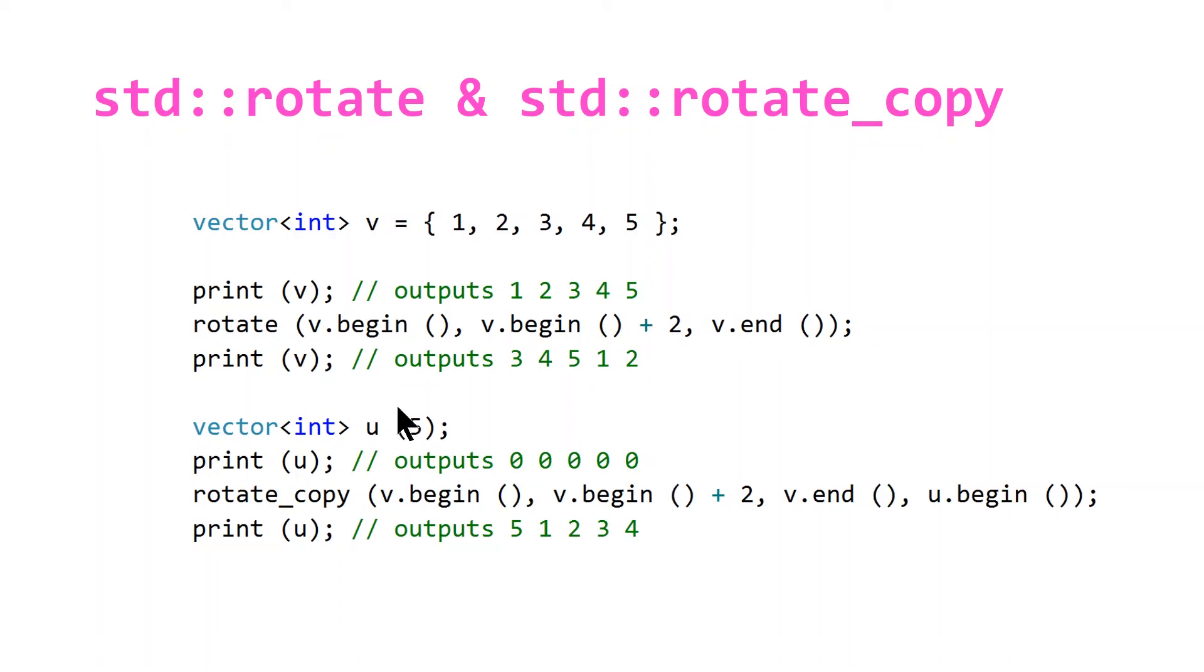And now we're doing a rotate_copy, again pointing to the third element which at this point will be the five, and we're going to output it to the beginning of our vector u. And so at this point it's going to shift the 5, the 1, and the 2 to the front and put the 3 and 4 at the back, so it'll output 5 1 2 3 4.